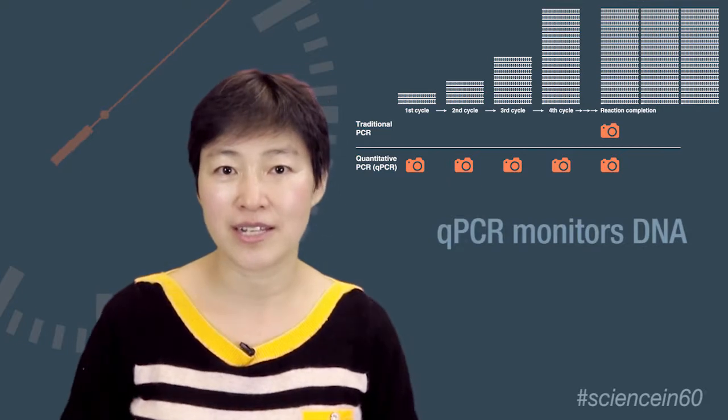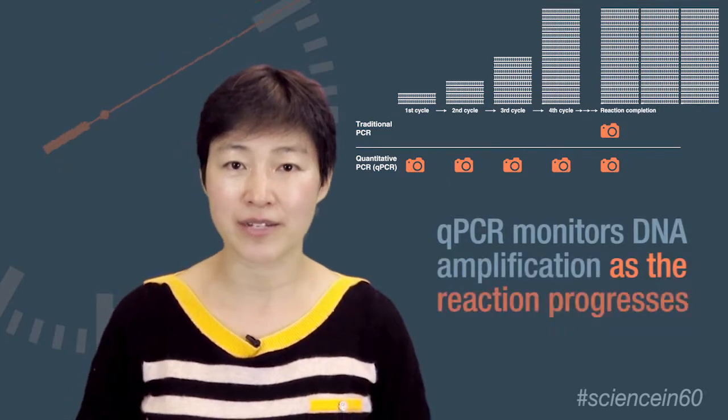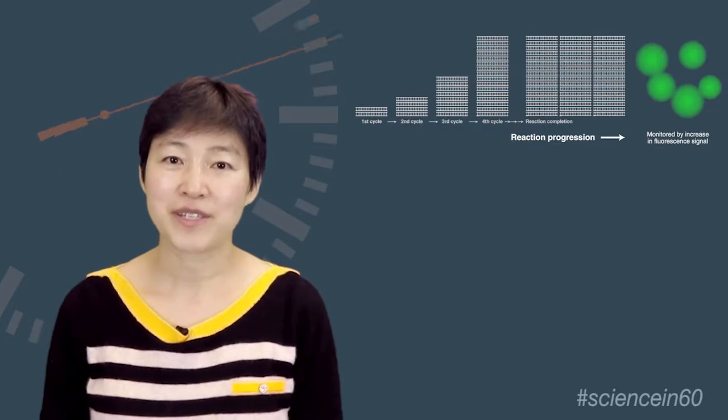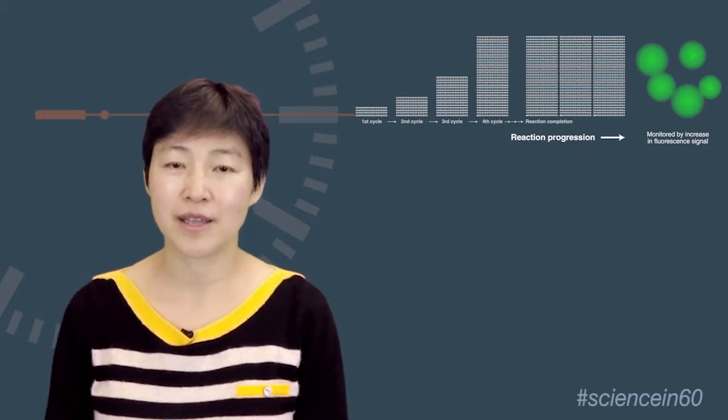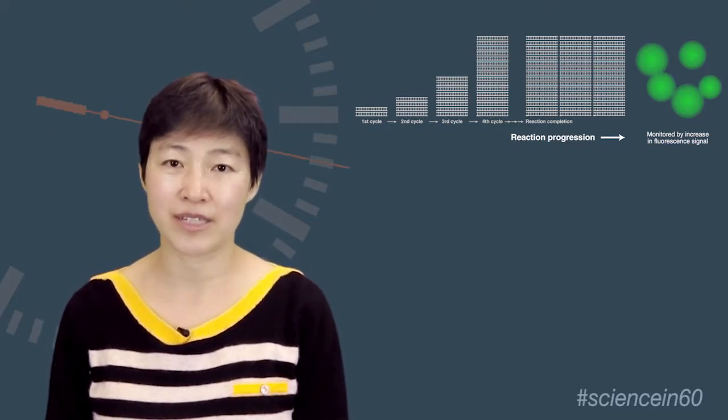In contrast to PCR, where the detection of a target sequence occurs at the end of a reaction, qPCR monitors DNA amplification as the reaction progresses. In qPCR assays, reaction progression is monitored by an increase in fluorescent signal.